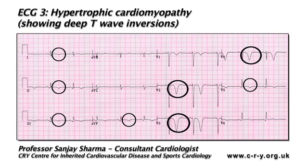The presence of T-wave inversions in an athlete's ECG should raise the suspicion of cardiomyopathy, anabolic drug abuse, recreational drug usage, or an ion channel disorder. These should be investigated before passing the athlete as normal.